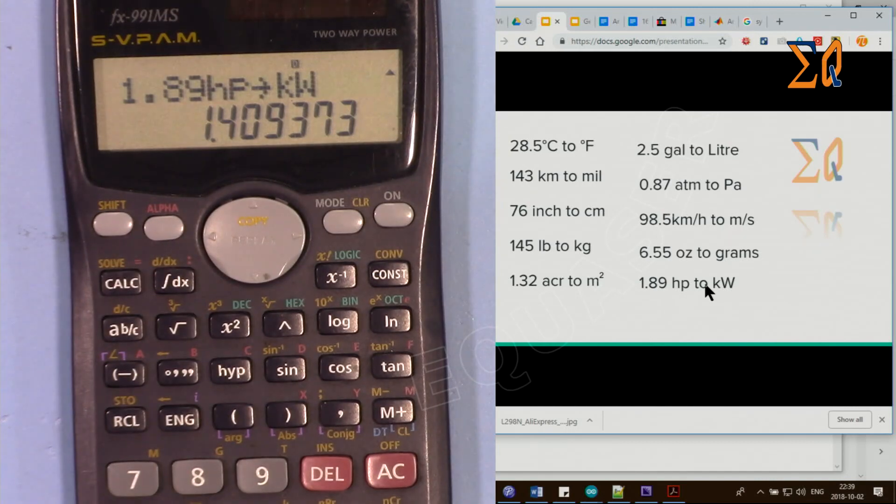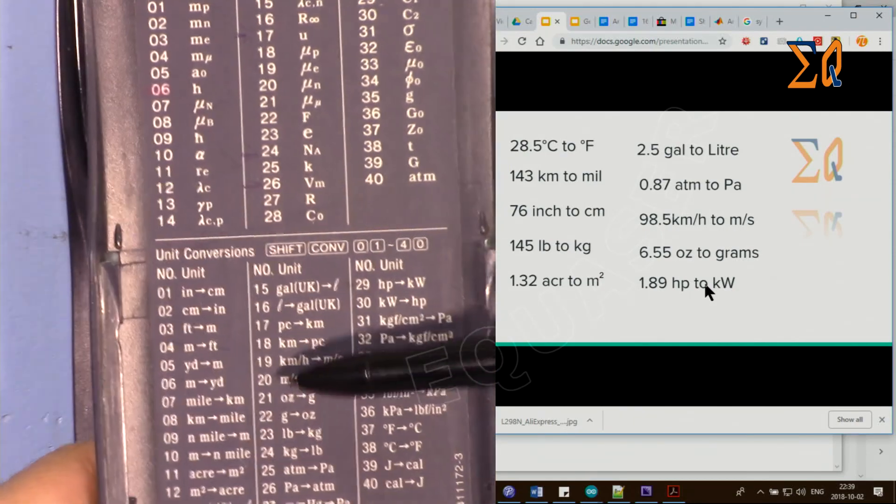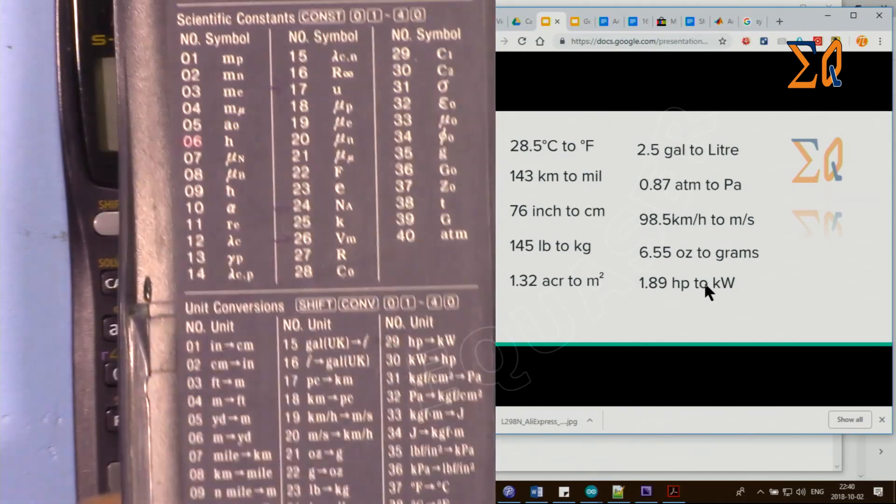Thank you for watching. This was how to use this Casio calculator to convert units. There are tons of other units and you can look at this table and follow the same procedure.